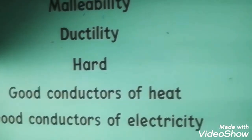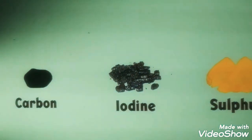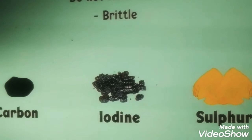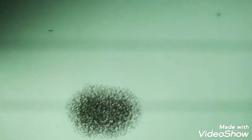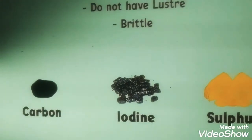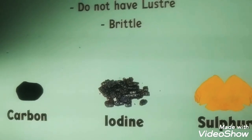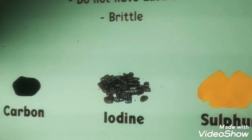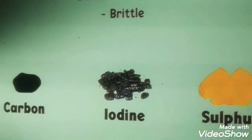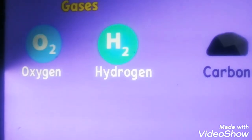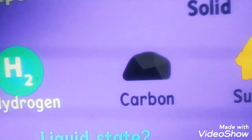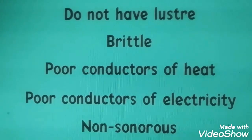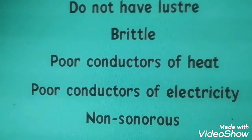Let's see the properties of non-metals. What are the non-metals? Carbon, iodine, sulfur — these are non-metals. They do not have luster property. Does carbon have luster property? No, they do not. And they are brittle — they cannot be drawn into sheets or thin wires. When we hammer or beat them, they just get brittle. Gases like oxygen and hydrogen are also non-metals. Non-metals cannot conduct heat and electricity. They are non-sonorous — they do not make any sound when dropped on the floor.